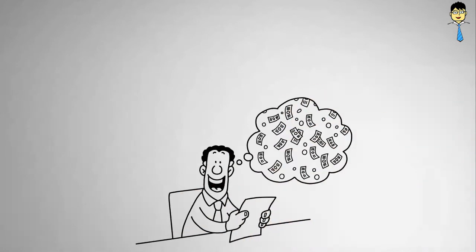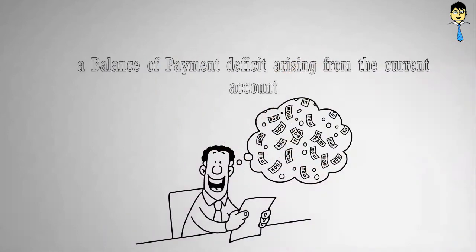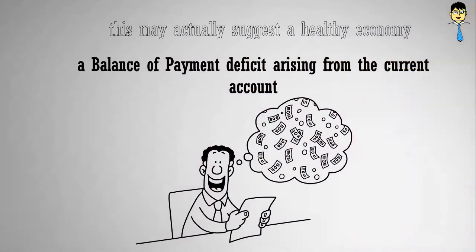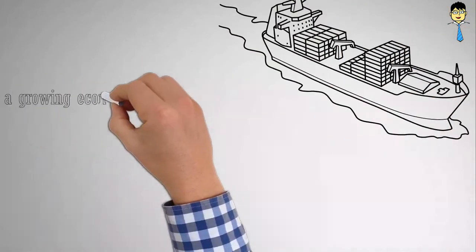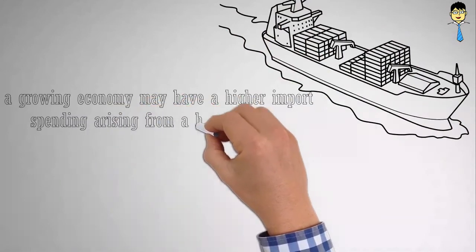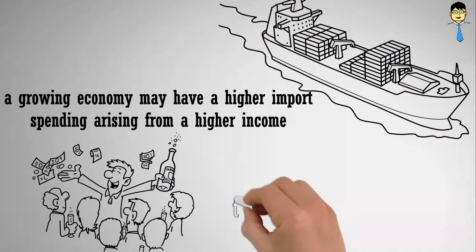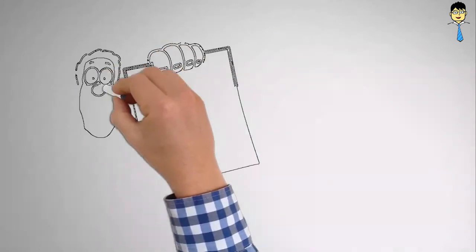However, when there is a balance of payments deficit arising from the current account, this may actually suggest a healthy economy. This is because a growing economy may have higher import spending arising from a higher income. Due to a higher income, this improves the material standard of living. Therefore, this tells us that a temporary deficit may not imply an unhealthy economy.